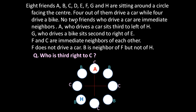Because no two friends who drive a car are immediate neighbors, and there are four car drivers and four bike drivers, alternate car and bike drivers are sitting around the circle. So we indicate car, bike, car, bike alternately. At the same time, let us prepare a small table: A drives a car and H drives a bike. So the first statement is taken care of.